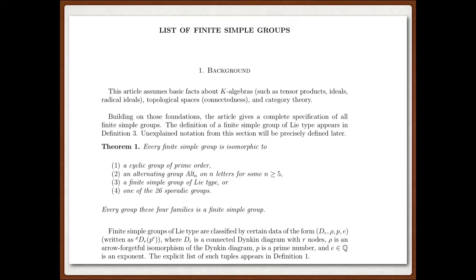So, so far, the group at Pittsburgh has written down the 26 sporadic groups, cyclic groups, and alternating groups are not much trouble, but we haven't finished the project of writing down what the groups of Lie type are.